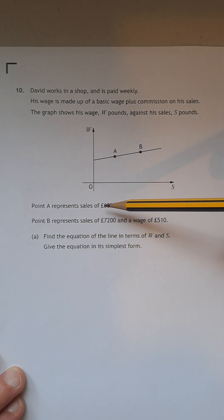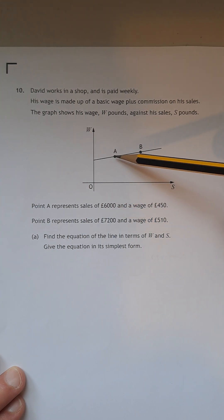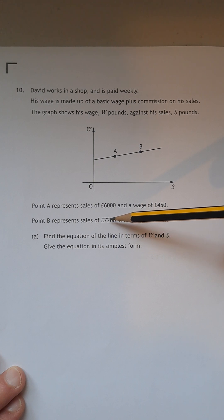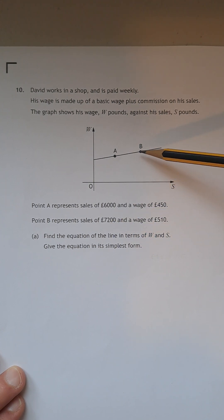So point A represents the sales of 6,000 and a wage of 450. So A is the point, if you imagine it that way, 6,000 along, 450 up. Similar for B, 7,200 in sales and 510 up. So B is the point 7,200, 510.